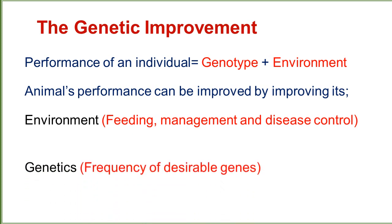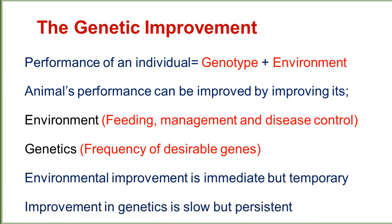The next is genetics. Genetic improvement depends on the frequency of the desired genes — what improvements we are searching for in an animal, and the genes related to those desired traits. The desired traits will be measured by frequency, and the frequency of the desired genes is ultimately related to improvement in genetics.